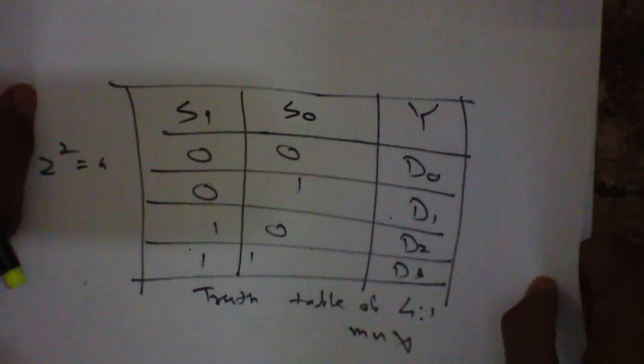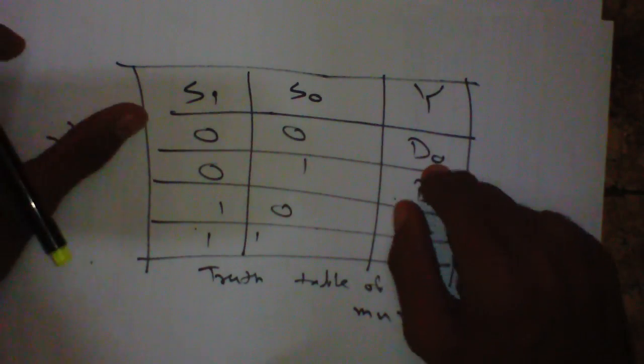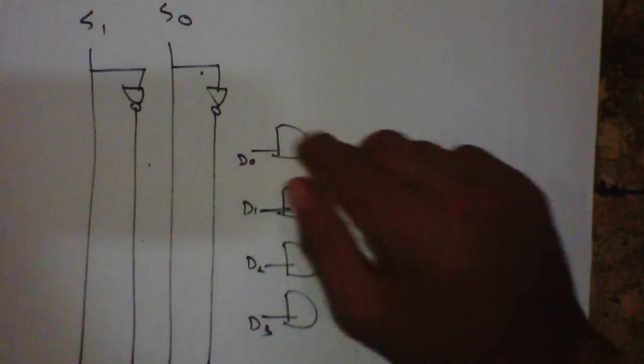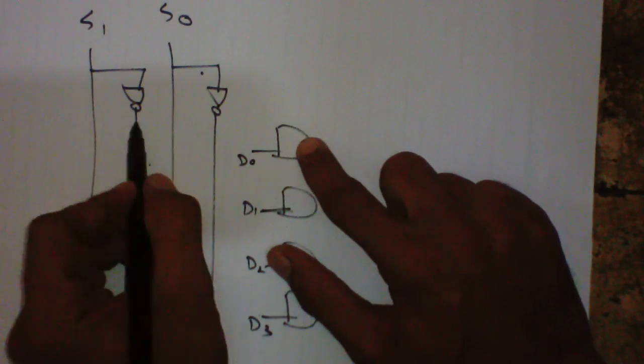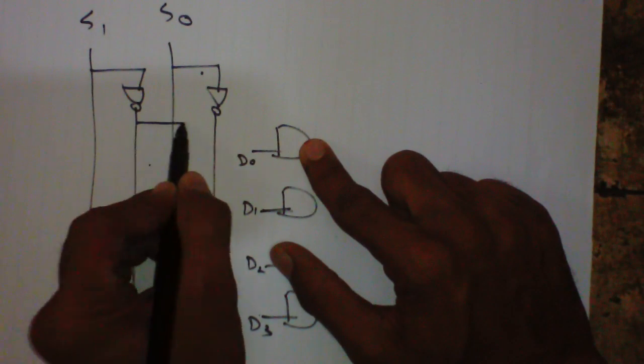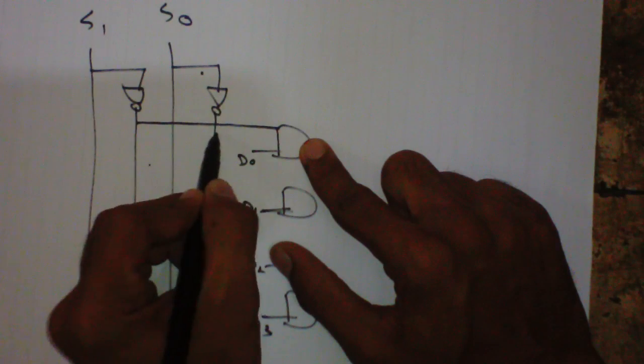With help of this truth table, so for D0 both will be 0 0, so 0 means invert, so inverted will be connected of both. And invert of this.